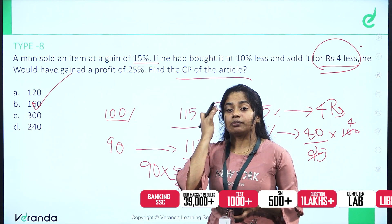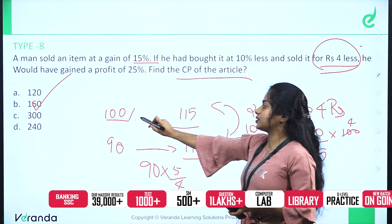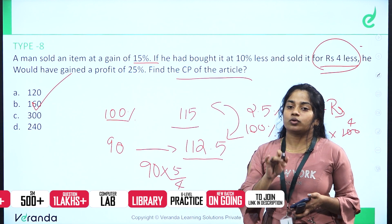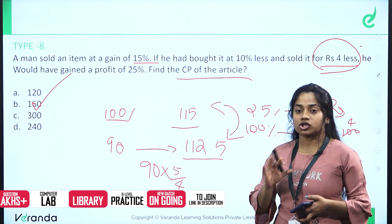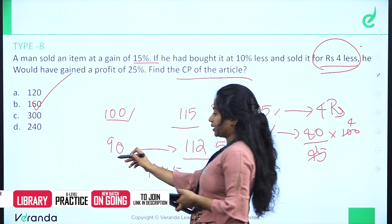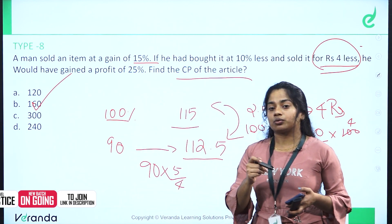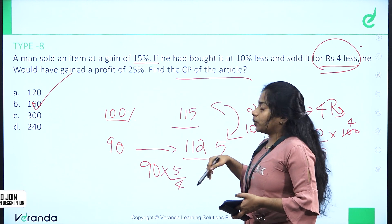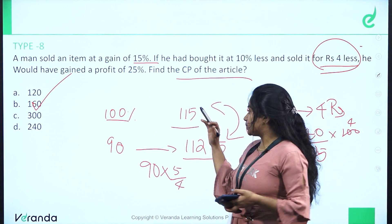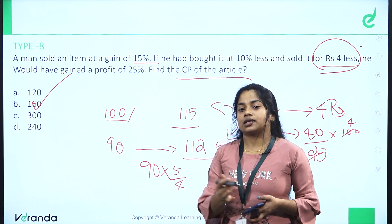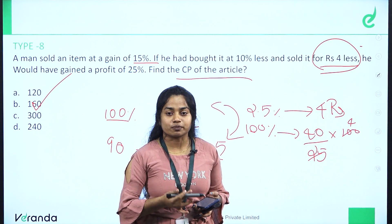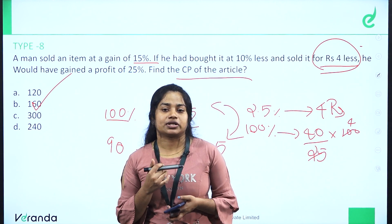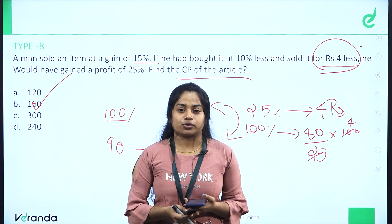Conditions: we formulate the percentage — 100% base, 15% profit means we use 1.15 multiplier, giving 10 rupees difference. The difference of 2.5 and 4 rupees leads us to the Cost Price via 100%. Next question coming up.